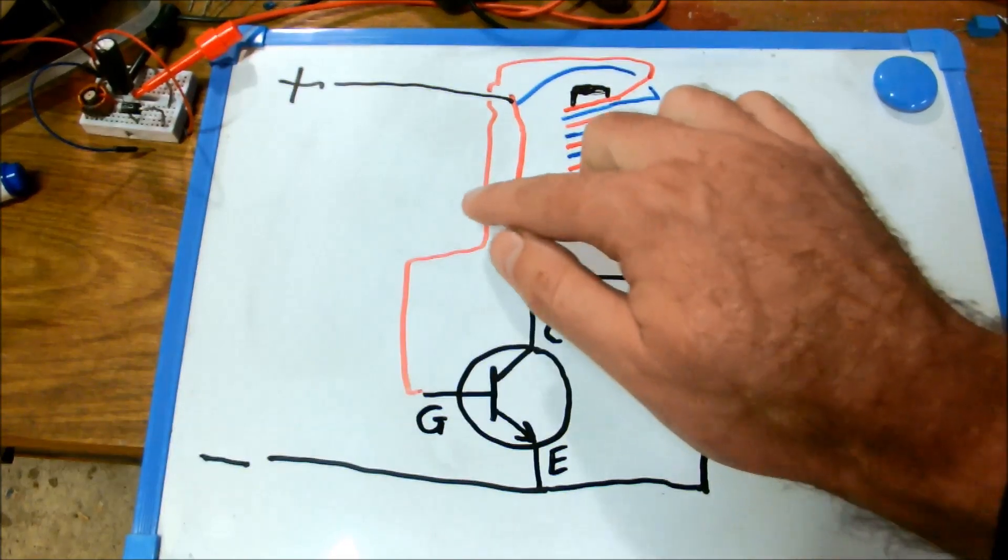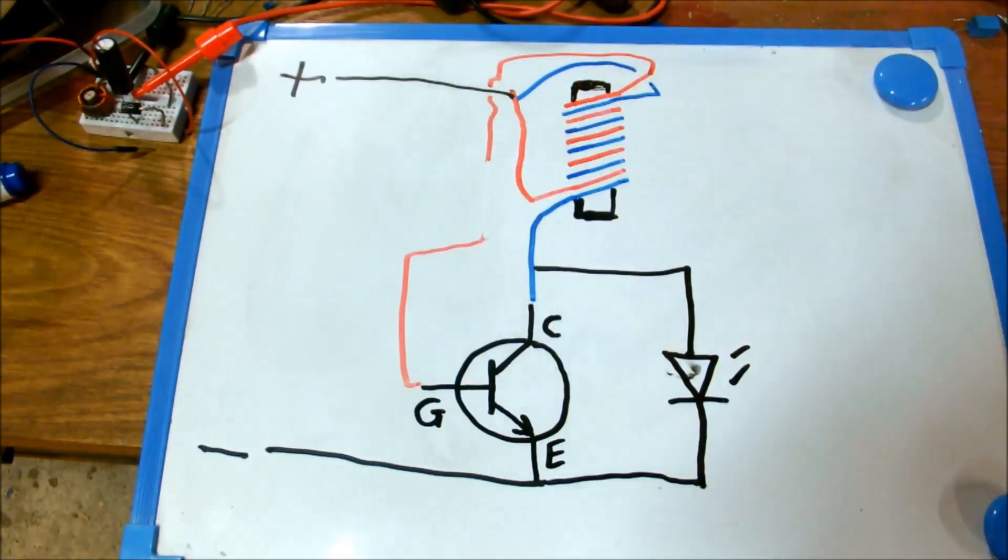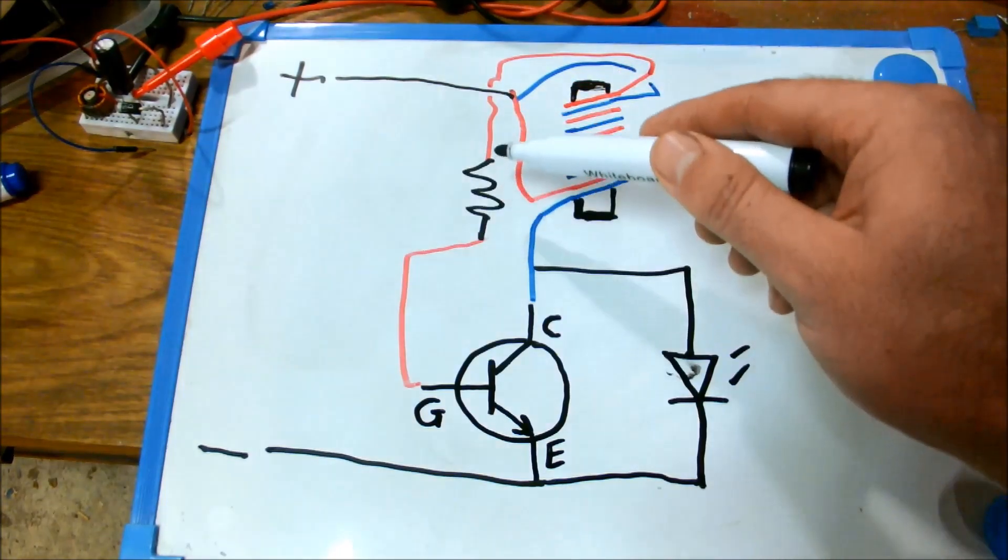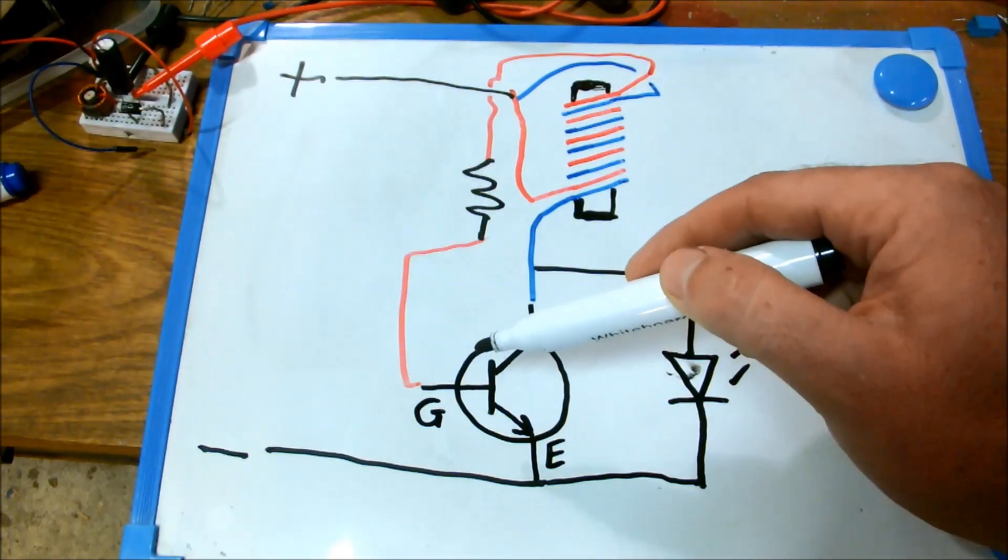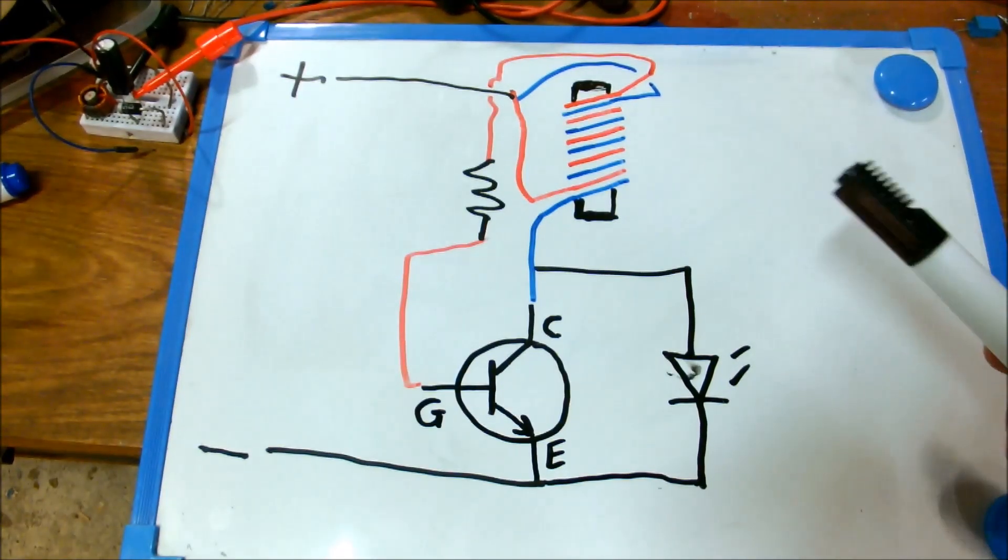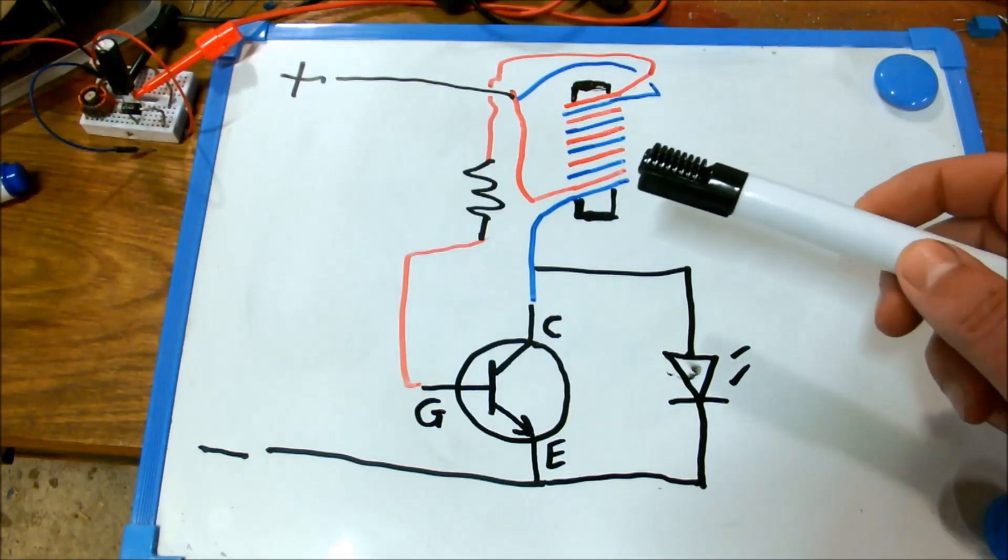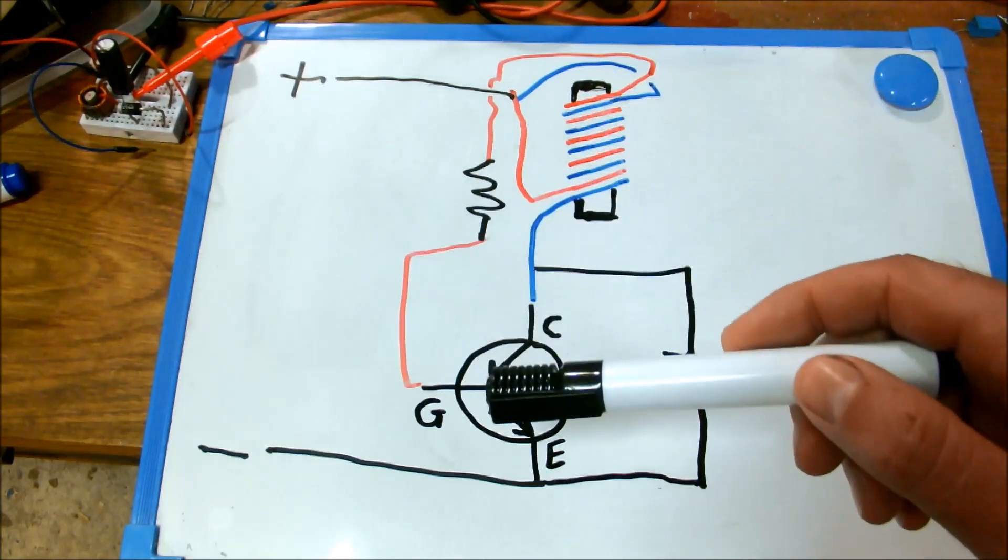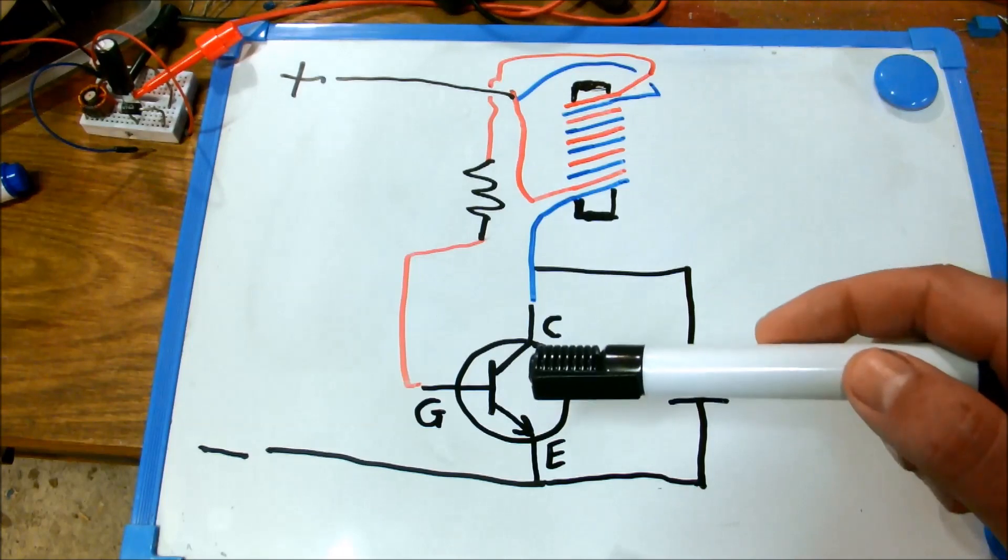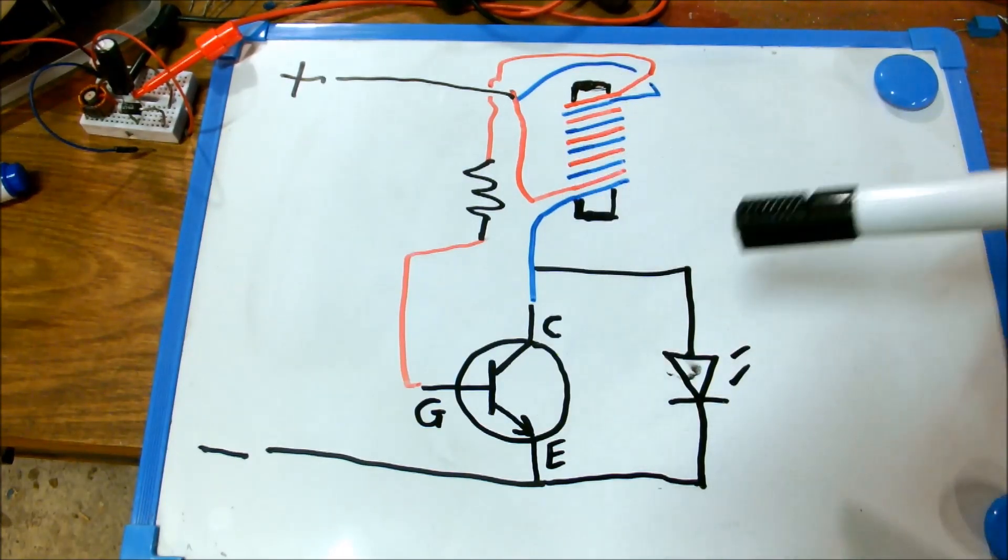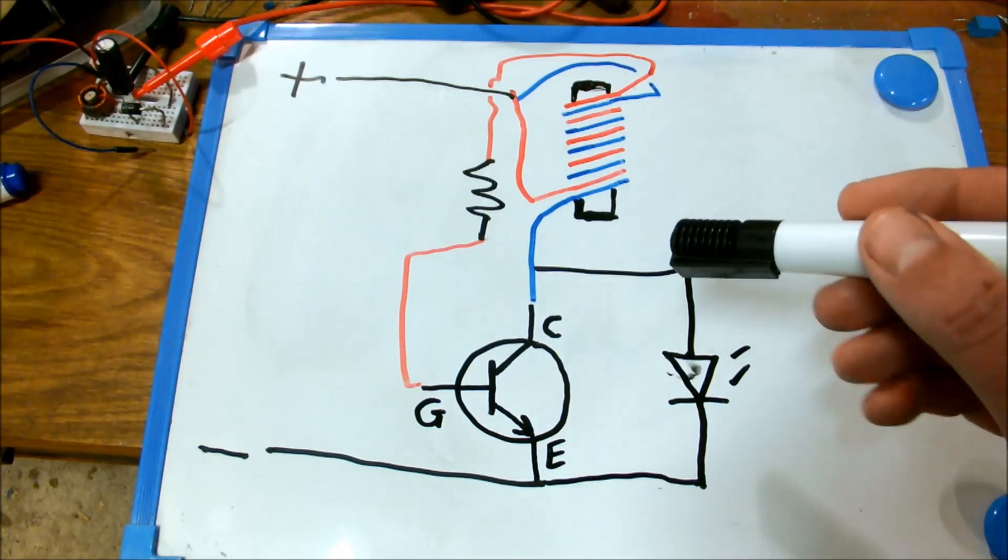Before I forget, one additional component that you almost always see is a resistor on this wire going to the gate. There are numerous videos available that will explain the details of how this coil and transistor configuration creates an on-off pulsing cycle.